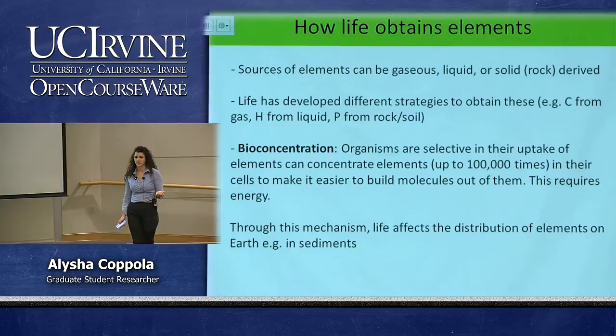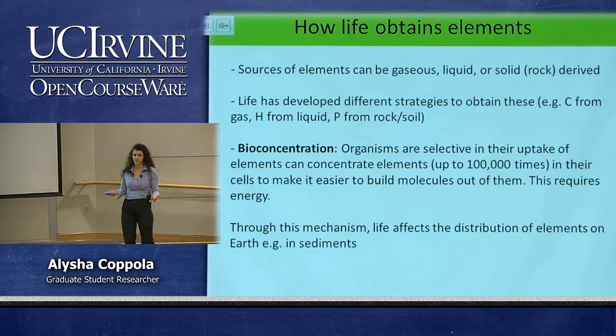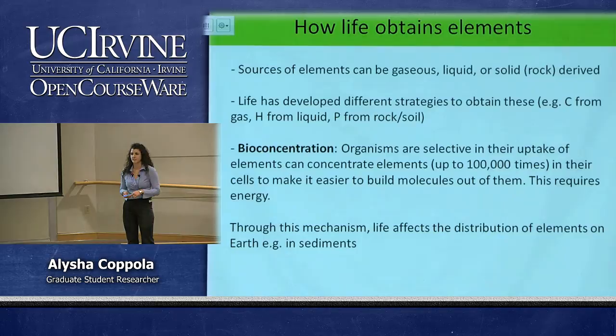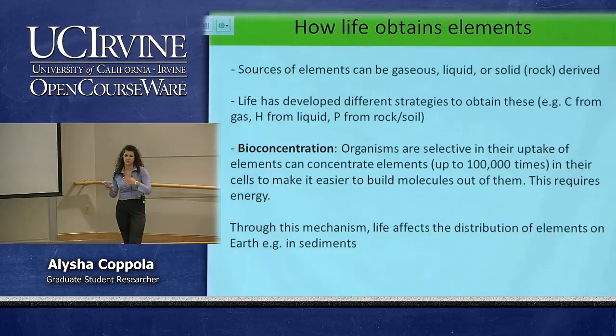Sometimes this happens a hundred thousand times compared to the natural environment. Algae can concentrate iron at concentrations a hundred thousand times greater than the surrounding seawater — that's how it accumulates enough to grow. Through this mechanism, life ends up impacting the environment and the distribution of elements. For instance, seashells are grown and skeletal remains fall from upwelling areas because calcium is incorporated into shells — coccolithophores and other organisms affect sedimentation and where calcium is located around the world.